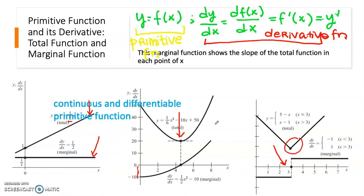So figures one and two have a continuously differentiable function, while figure three is a continuous function but not differentiable everywhere. A continuous and differentiable primitive function will have a smooth, continuous marginal function. A continuous but not differentiable function will show a non-smooth and non-continuous marginal function — shown by the gap in figure three.